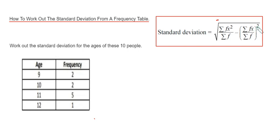In this formula, f stands for the frequency, x stands for the data values, and this symbol here is sigma, which means the sum of or the total. Okay, so let's have a look at the example.